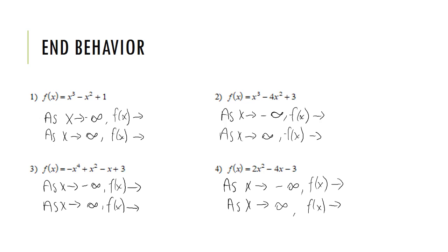For example 1, the degree is odd and the leading coefficient is a positive 1. Since the degree is odd, one end of f(x) goes positive and one goes negative. Since the leading coefficient is positive, it matches what x is doing: as x goes negative, f(x) goes negative; as x goes positive, f(x) goes positive.